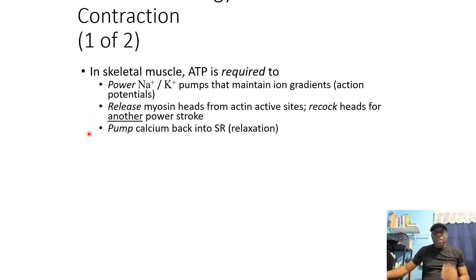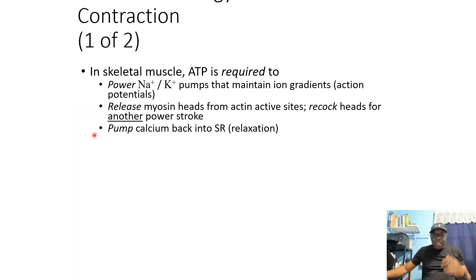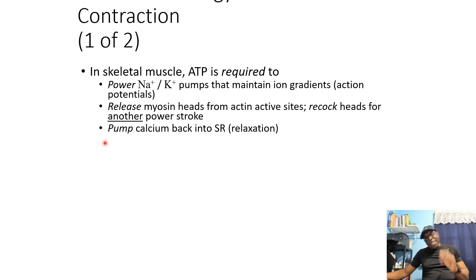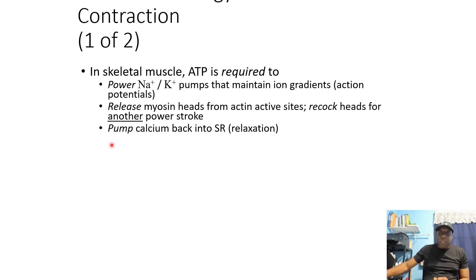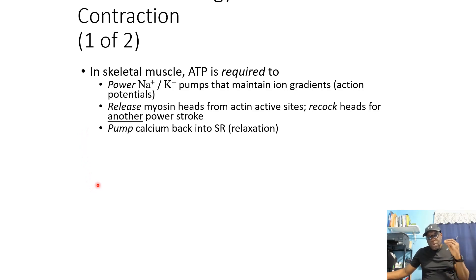When all contraction has come to completion, we cannot allow calcium to remain in high concentration in the sarcoplasm because that will continue to initiate excitation and contractility. So we need to get the calcium out. There are active calcium pumps in the membrane of the sarcoplasmic reticulum, and these pumps require ATP to pull the calcium out of the sarcoplasm back into the stored region — the terminal cisternae, the sarcoplasmic reticulum. So those are three specific applications of ATP in the muscle cell.